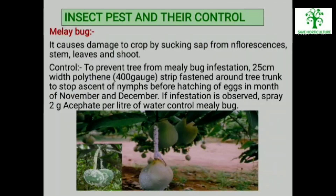Insect Pests and Their Control — Mealybug: It causes damage to the crop by sucking sap from inflorescence, stem, leaves and shoot. Infestation is observed mostly in January to April. Mealybug-affected parts dry up and sooty mould is seen in infected parts. To prevent the tree from mealybug infestation, 25 cm width polythene of 400 gauge is fastened around the tree trunk to stop the ascent of nymphs before hatching of eggs in November and December. If infestation is observed, spray 2g acephate per litre of water to control mealybug.